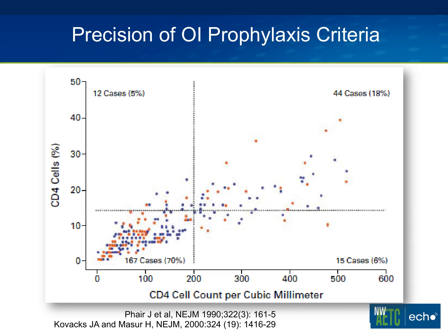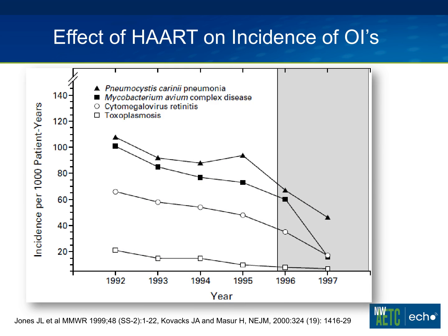Our guidelines for initiating prophylaxis against PCP are not perfect. Data from the MACS cohort looked at PCP development stratified by CD4 percent and absolute CD4 count, showing that most cases occurred in individuals with low counts and low percentages, but maybe up to 20% of cases happened in individuals with higher CD4 counts. This was in the pre-HAART era, so immune dysregulation from uncontrolled virus was likely responsible. For people on HAART with a suppressed virus, it would be very unlikely to develop PCP at higher CD4 levels.